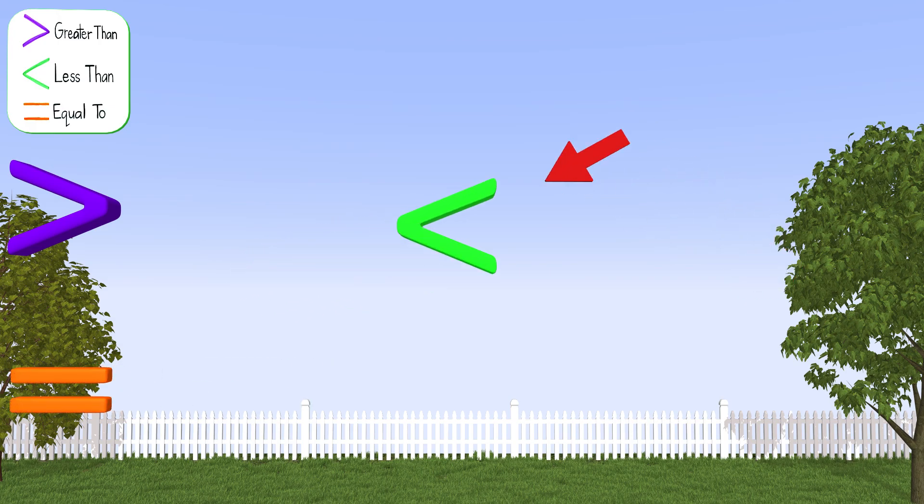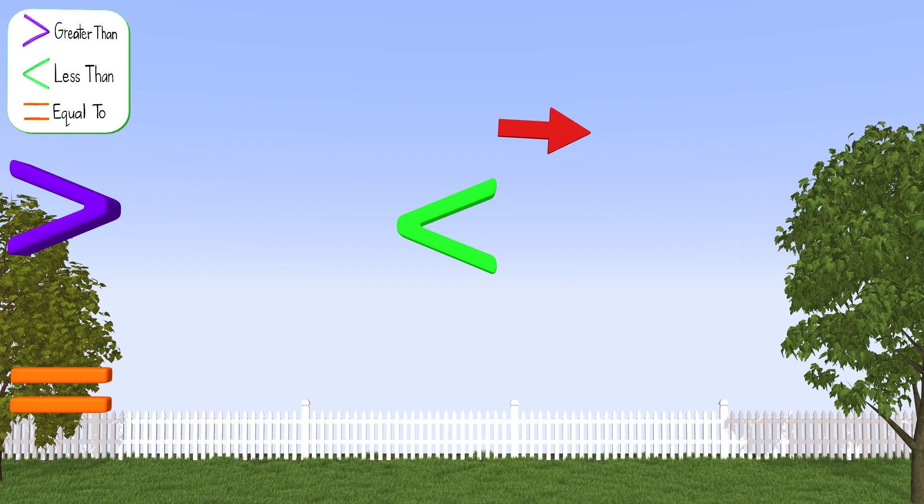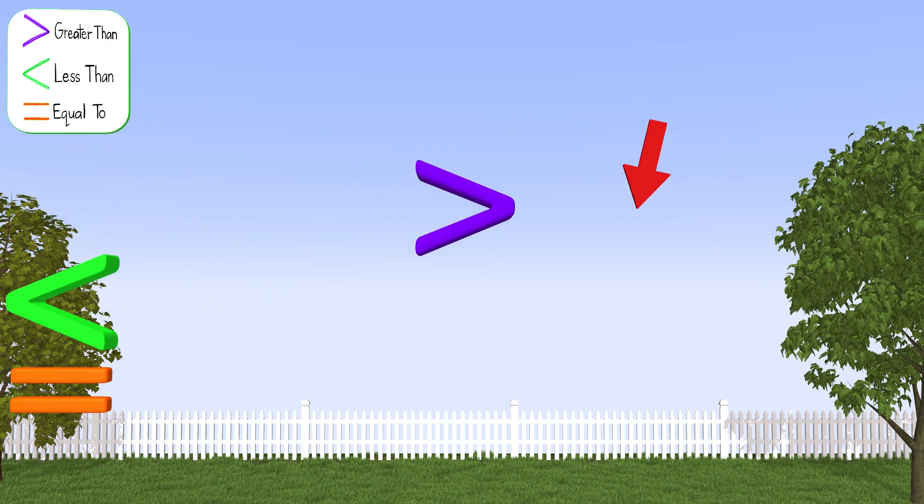This symbol is the less-than symbol. You can see how this symbol looks like a big alligator mouth. The less-than symbol always has the big mouth facing the right side. The greater-than symbol also has the same big mouth, but the mouth always points to the left.